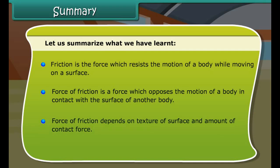Summary: Friction is the force which resists the motion of a body while moving on a surface. The force of friction opposes the motion of a body in contact with the surface of another body. The force of friction depends on the texture of the surface and the amount of contact force.